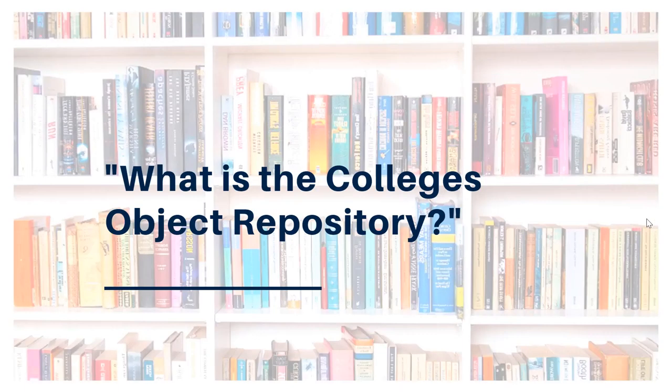The College's Object Repository, or CORE, is a collaborative initiative aimed at creating access to unique digital content. There are seven college libraries participating in this project, and the Parrott Center is proud to be one of them. The Loyalist College Repository has several collections including archival materials, artwork, and works created by Loyalist students, faculty, and staff.